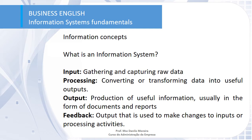The input is the gathering and capturing of raw data. When I convert and transform data into useful outputs or information, I have the process. The output is the knowledge or information delivered at the end, usually in the form of documents or reports. The feedback stage is where the output is used to make changes to inputs or processing activities — it's how useful information is sent back to the other steps.